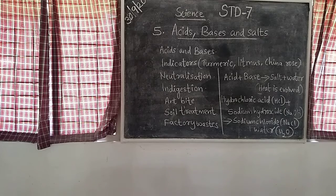Lemon, orange juice, vinegar, curd — these are acidic substances. Their chemical nature is acidic.